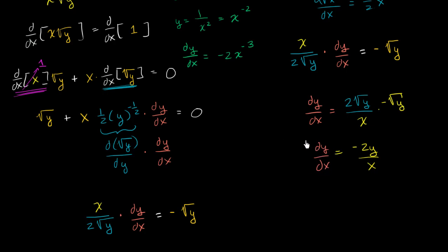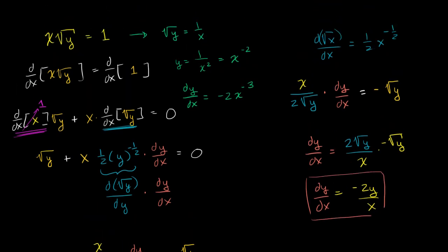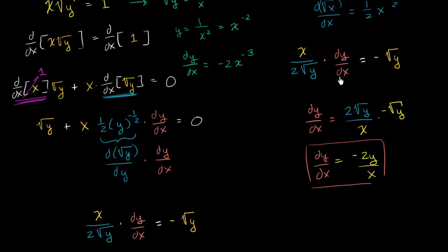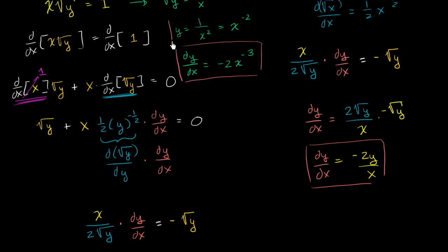Now you might be saying: we just figured out the derivative implicitly, and it looks very different from what we did using the power rule, where we got negative 2 x to the negative 3 power. The key is to realize that we could solve explicitly for y and make that substitution back in to see that these are the exact same thing.